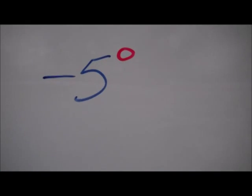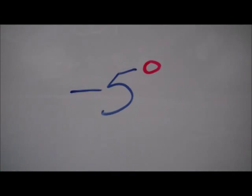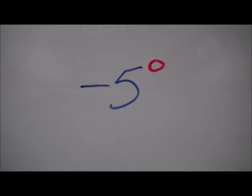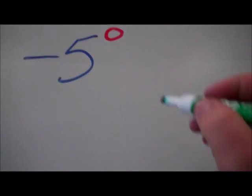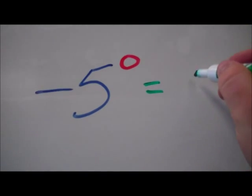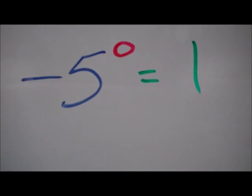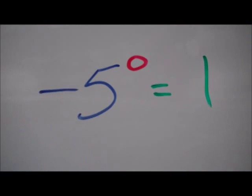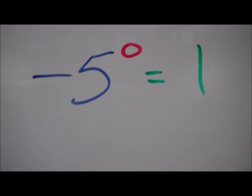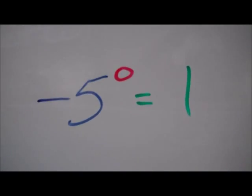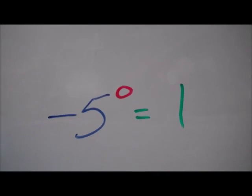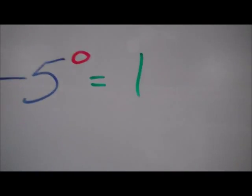Next problem, a little bit different: negative 5 to the zero power. Remember, anything to the zero power will always be 1. The only exception to that rule is 0 — 0 to the zero power is undefined.